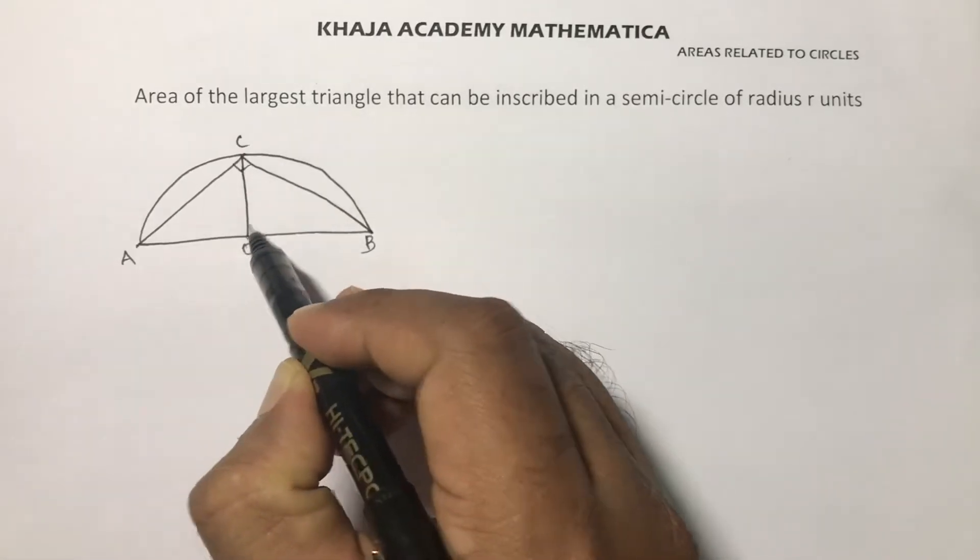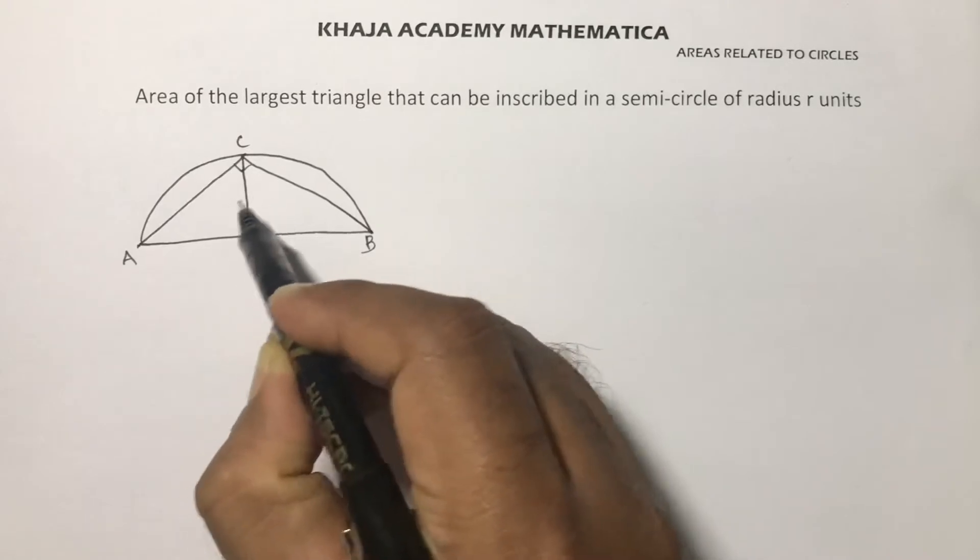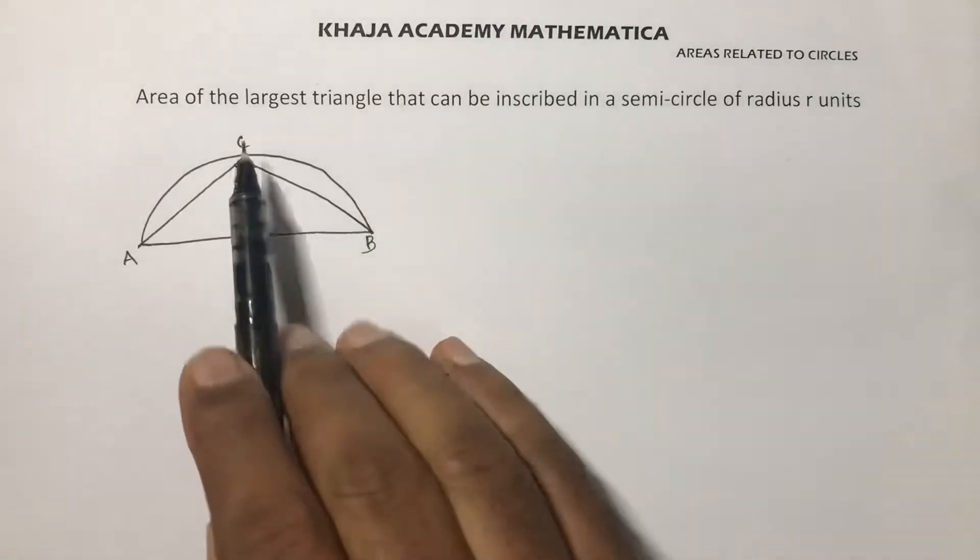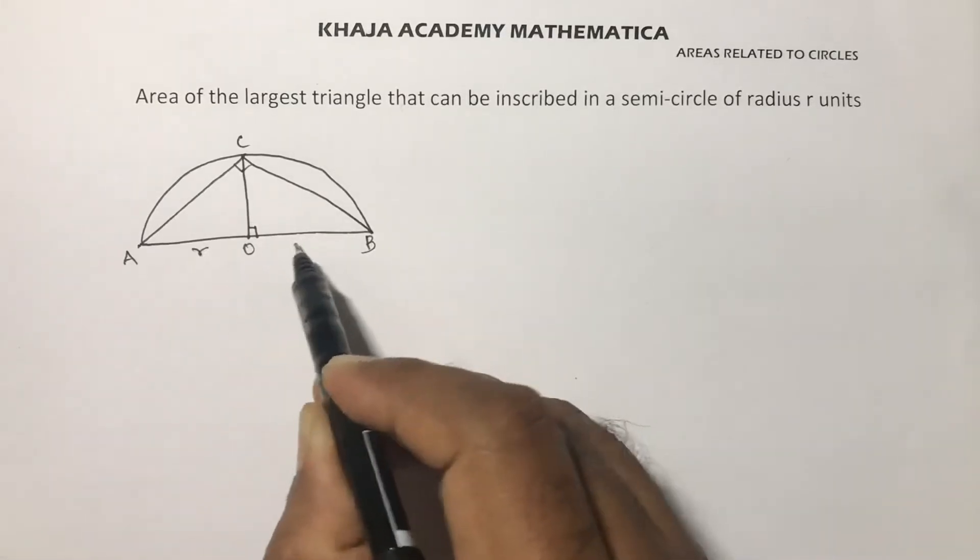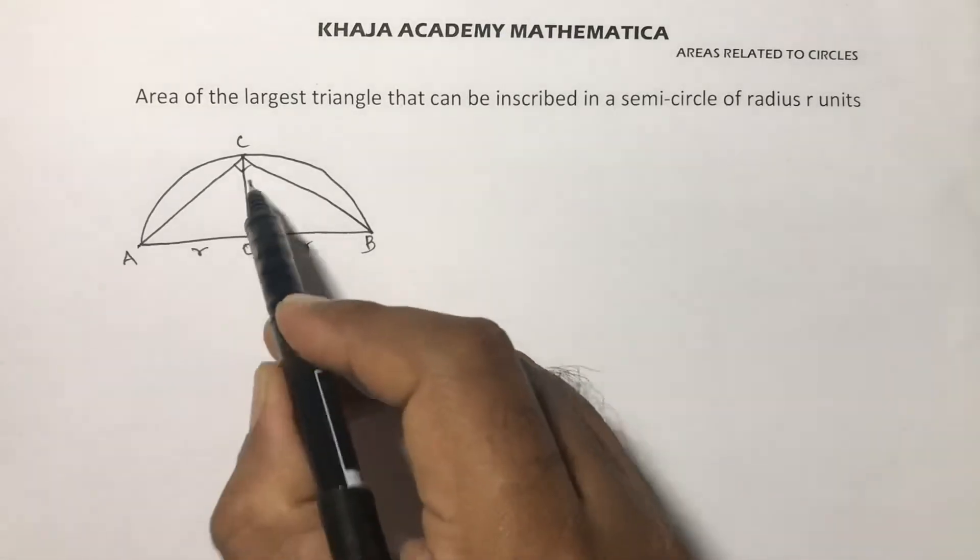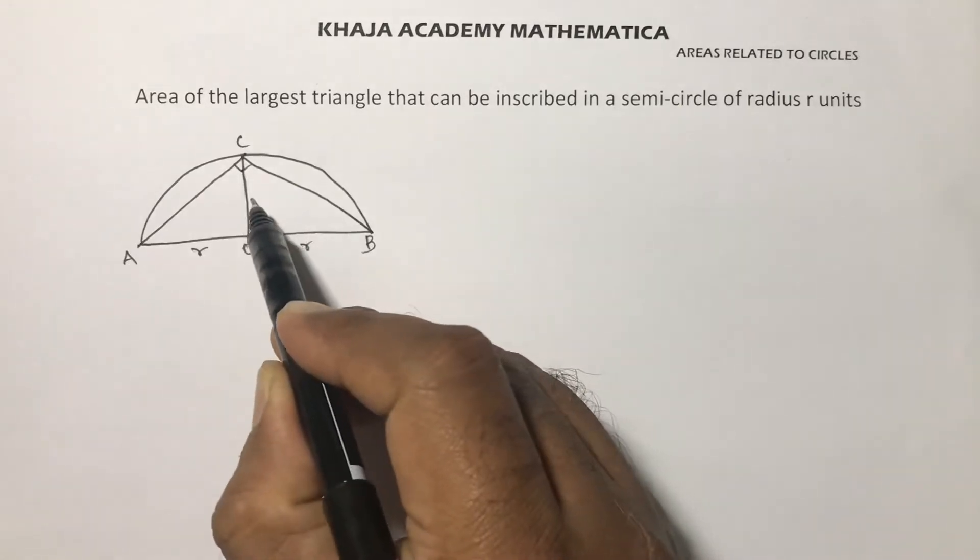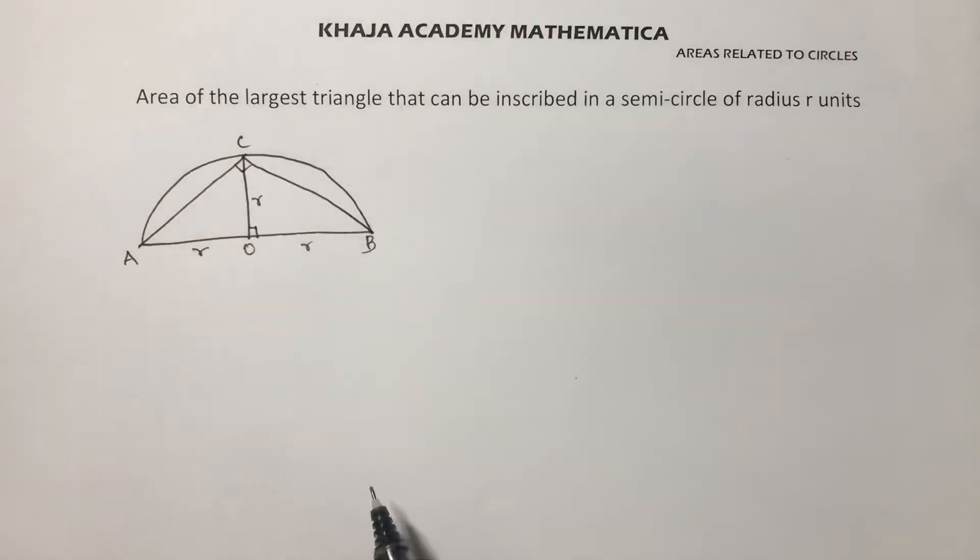Take a point exactly at the center so this will be the height of the triangle. AO is the radius, OB is also the radius, OC is also the radius. Now for the area of a triangle: